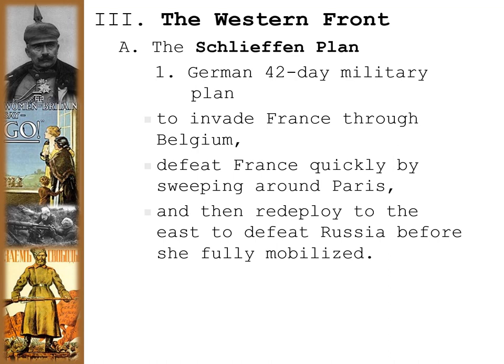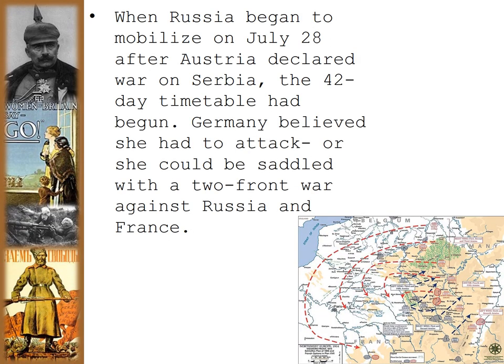When Russia began to mobilize on July 28th, 1914, after Austria declared war on Serbia, the 42-day timetable of the Schlieffen Plan had begun. This is why Germany believed she had to attack France first — or be saddled with a two-front war against Russia and France simultaneously. So that is why Germany attacked France first.